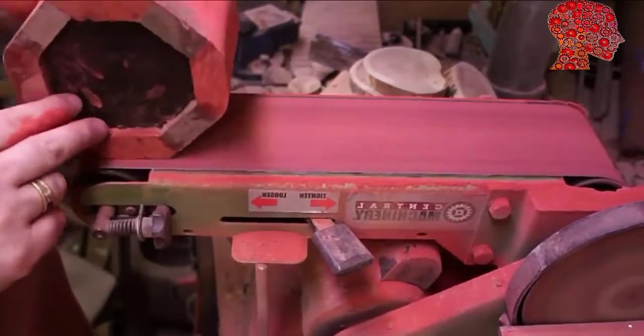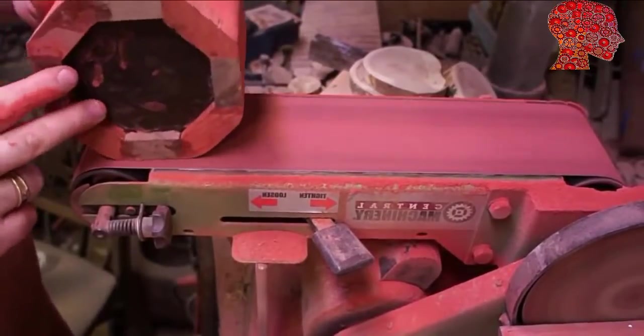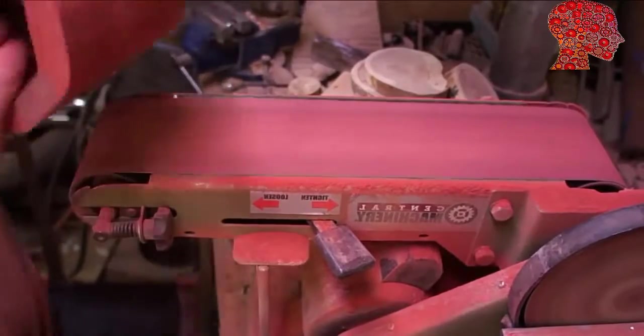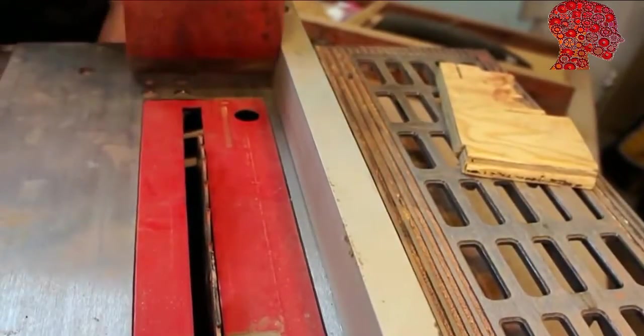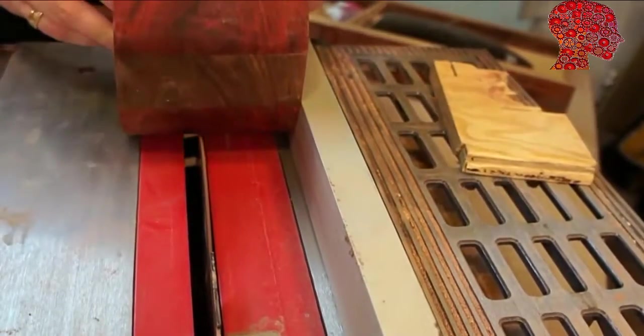Then of course after that I have to take it over to the belt sander. I actually cut off the little protrusions with the saw and then took it over the belt sander. I ended up using those a little bit later in the video.